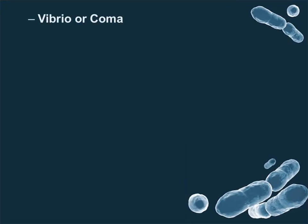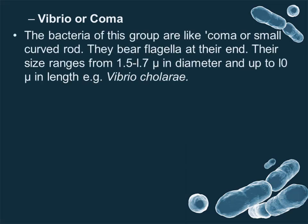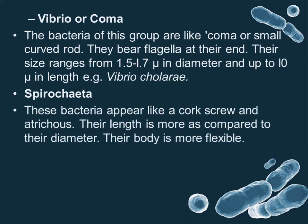Vibrio or comma-shaped bacteria: the bacteria of this group look like a comma or small curved rod. They bear flagella at their end. Their size ranges from 1.5 to 1.7 microns in diameter and up to 10 microns in length, for example, Vibrio cholerae. Spirochetes: these bacteria appear like a corkscrew and are helical. Their length is greater compared to their diameter, and their body is more flexible.